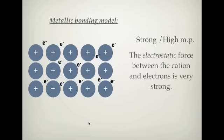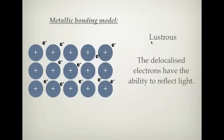The next thing is why metals are lustrous — why are they shiny? The explanation is that the delocalized electrons have the ability to reflect light. That's all you really need to know about why metals are shiny: these delocalized electrons reflect the light that shines onto them.